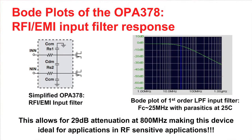Most recently, TI released the OPA378, a low-noise, zero-drift, low-power op-amp with EMI filtering. The EMI filter on the OPA378 creates over 29 dB of attenuation in the RF frequency range. This is superb for such a high-precision device and enables this op-amp to be utilized in RF-sensitive environments.